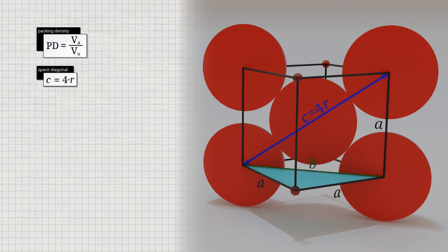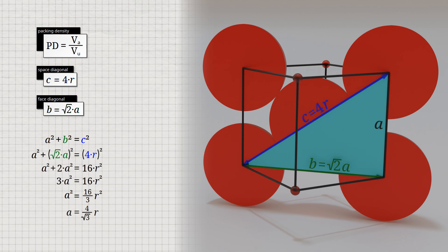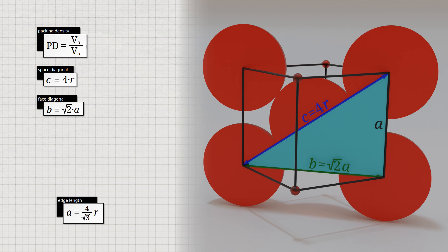We derive the relationship between the atomic radius R and the edge length A of the cube-shaped unit cell. For this purpose, we consider the face diagonal B, which forms the shown triangle together with the two edges of the cube. Using the Pythagorean theorem, we can specify the face diagonal as a function of the edge length: this diagonal corresponds to the square root of 2 times the edge length. We then use the Pythagorean theorem again with the space diagonal C, the face diagonal B, and the edge length to obtain the relationship: the edge length of the unit cell corresponds to 4 times the atomic radius divided by the square root of 3.